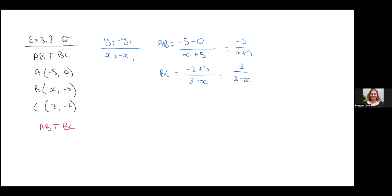All right, so I'm going to take this information now and say that AB is perpendicular to BC. So let's start with AB. We've got negative 5 over x plus 5, and that is going to equal the inverse of this. So I've got 3 minus x on the top and I'm going to make the bottom negative 3. That just makes my life a bit easier.